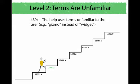Let's move on to the next one: terms are unfamiliar. The help uses terms unfamiliar to the user — for example, 'gizmo' instead of 'widget.' Your challenge is to figure out how you overcome this problem. Take a minute and I'll ask a couple of people to share.